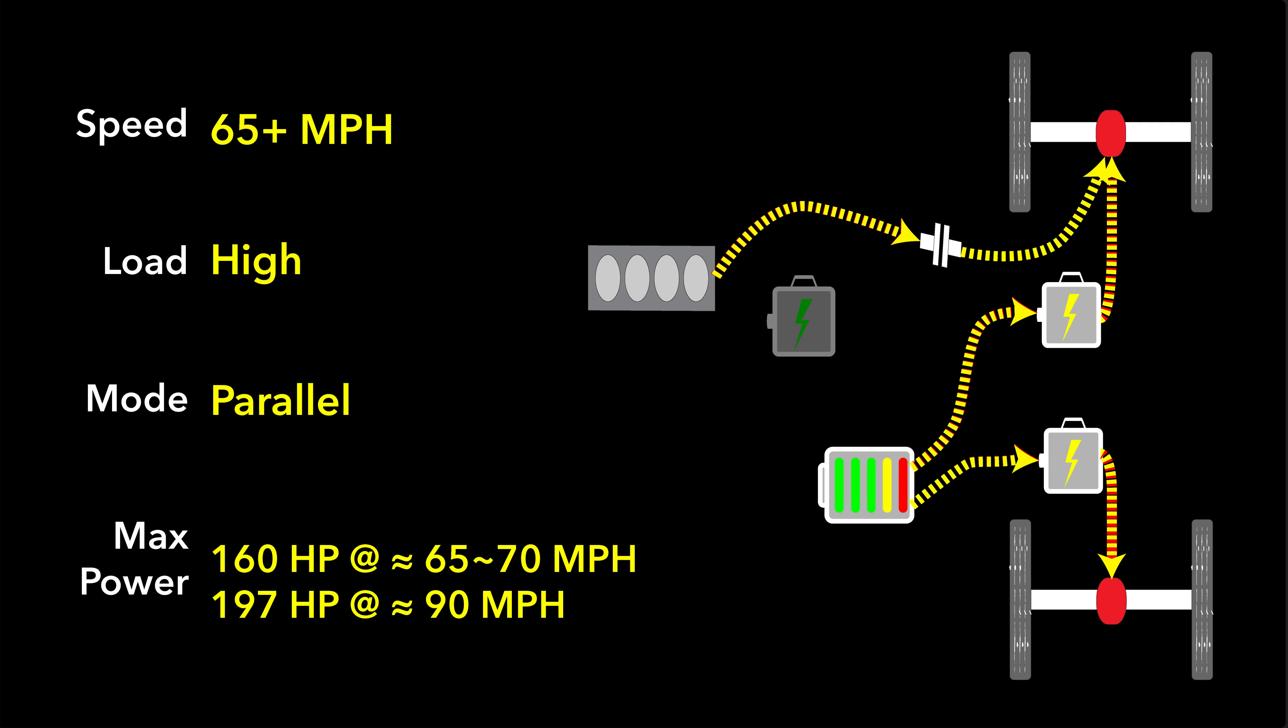Because of the fixed ratio between the engine and the front wheels, as you accelerate, there would be a point in time where the vehicle would have to move back to a serial hybrid mode in order to prevent over-revving the engine. However, the Outlander doesn't really go that fast, so it's not really a concern for this particular system.